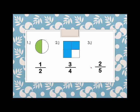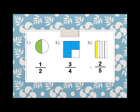Next: 2 fifths. We have 1, 2, 3, 4, and 5 parts. 2 fifths — how many shaded? We have 2. So we have to shade 1 and 2. So this is 2 fifths.